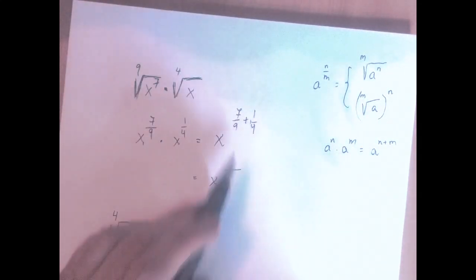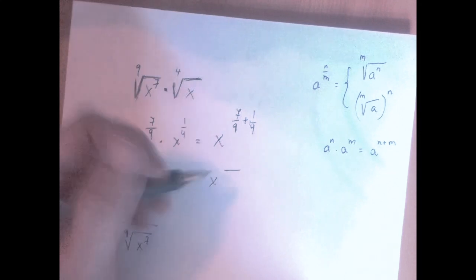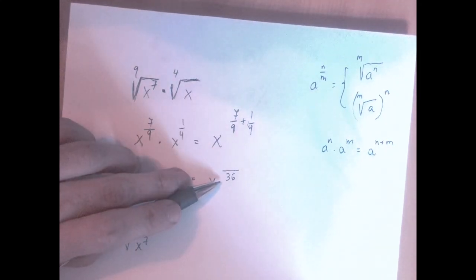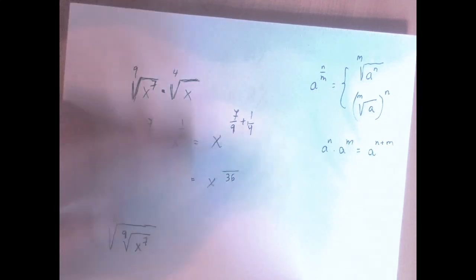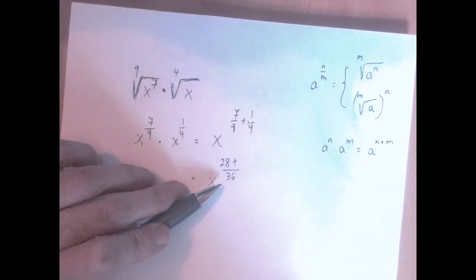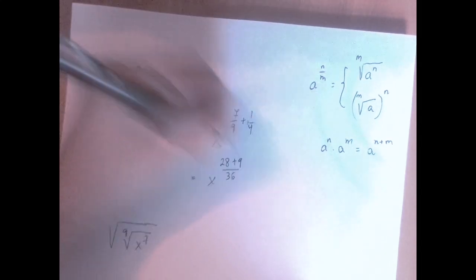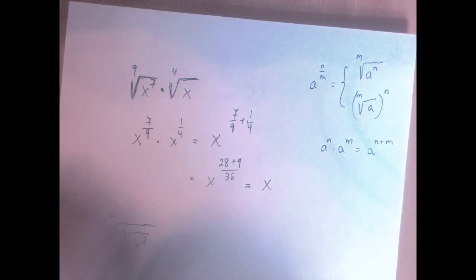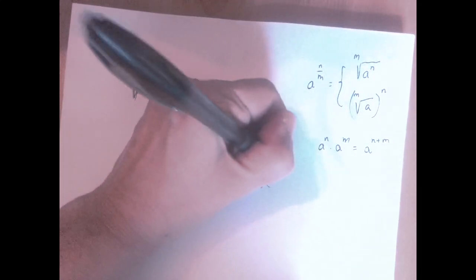Okay, so the common denominator between 9 and 4 is 36. 9 to 36, that was multiplication by 4, 7 times 4 is 28. 4 to 36, that was multiplication by 9, 1 times 9 is 9, so we have x to the power of 37 over 36.